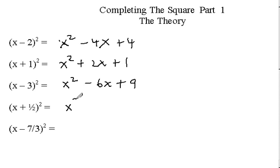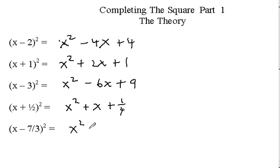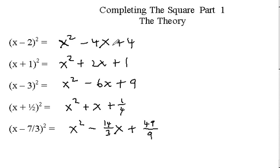Here we have x squared, and x times one-half doubled gives plus x, then we square one-half to get one-fourth. For x minus seven-thirds squared, we get x squared, minus fourteen-thirds x, plus forty-nine-ninths, since seven squared is forty-nine and three squared is nine. Each one of these is a perfect square trinomial, and it can be factored back into these squared binomials.